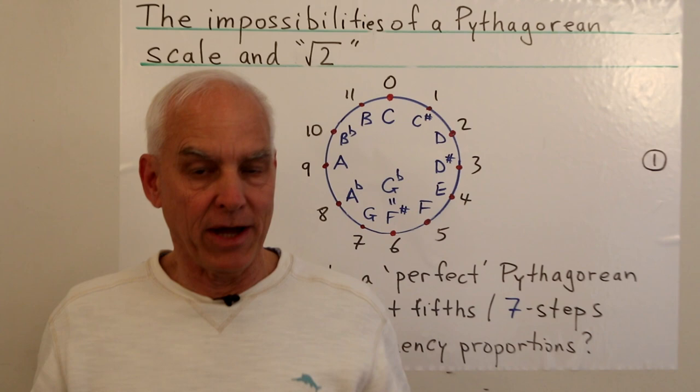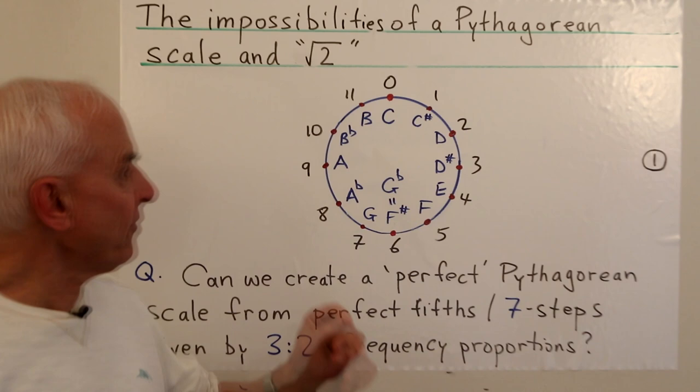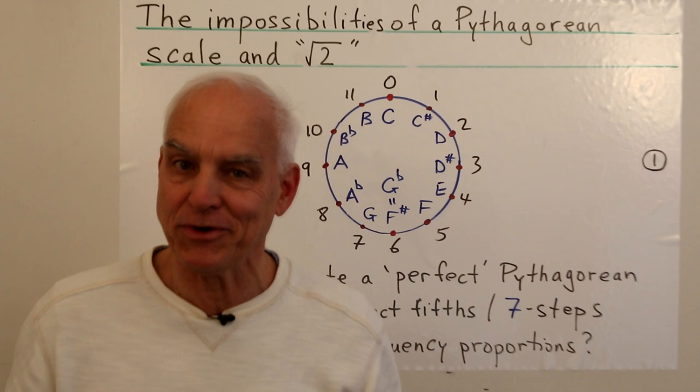You already know that you can't really do it, but I want to show you why a very natural attempt at doing this ultimately fails. It turns out very interestingly that it has a lot to do with this notorious irrational number, the square root of two.